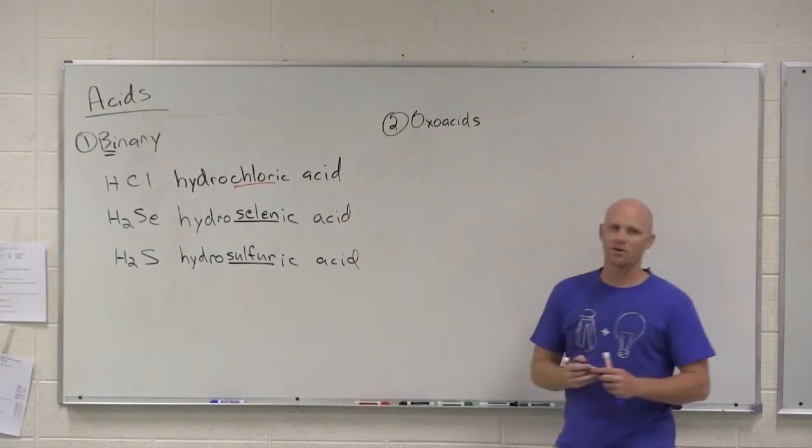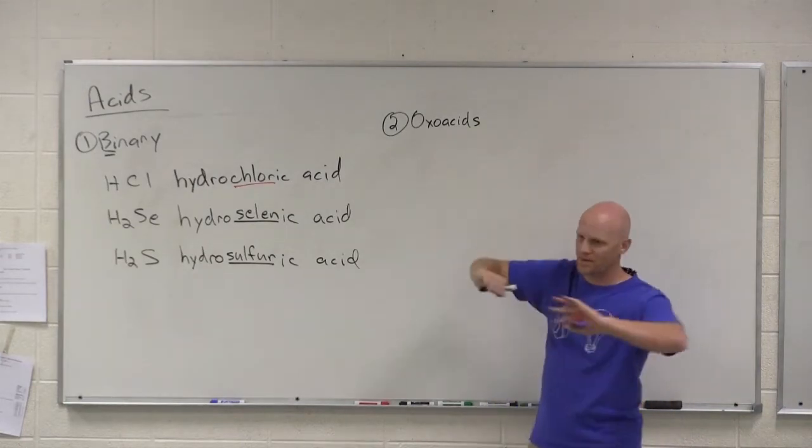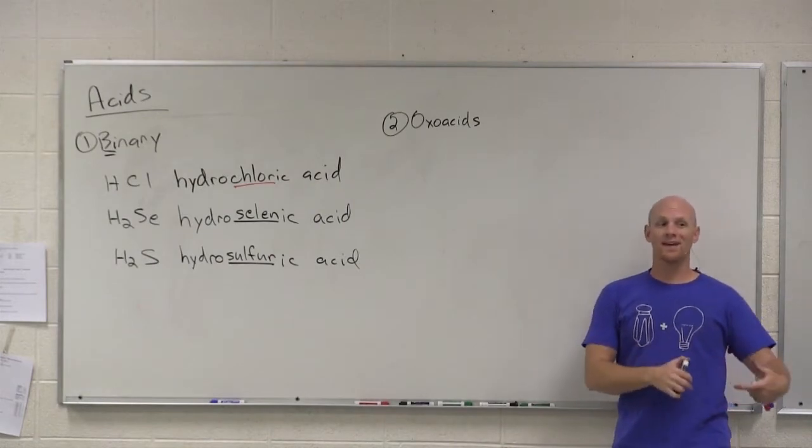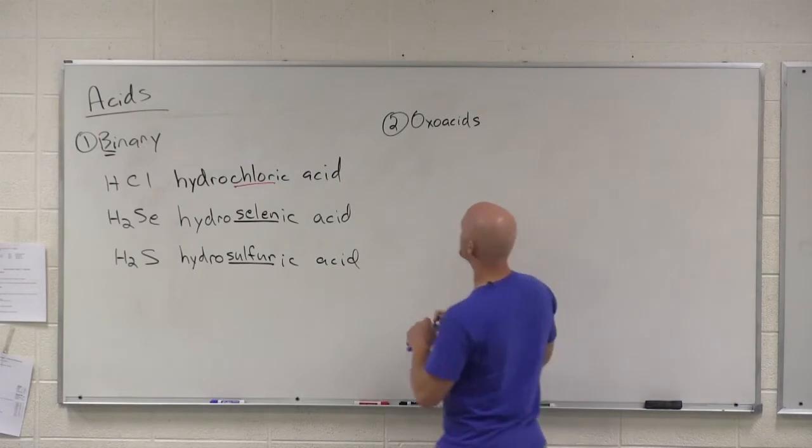Your other type of acid you've got to know how to name are your oxoacids, sometimes also called oxyacids with a Y. Same difference. These are the acids of your oxy or oxoanions, which are the polyatomic ions that contain oxygen. If you notice, most of your polyatomic ions do.